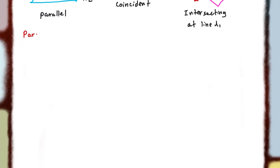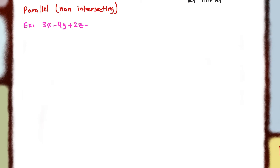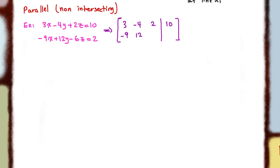Let's look at an example of each. We're going to start with an example for parallel planes — planes that are not intersecting. We're going to have two different planes written in their Cartesian form and try to solve this using augmented matrix. In the last video, we saw how we can find the point of intersection, but for equations with three variables we need three equations. In this case, we only have two.